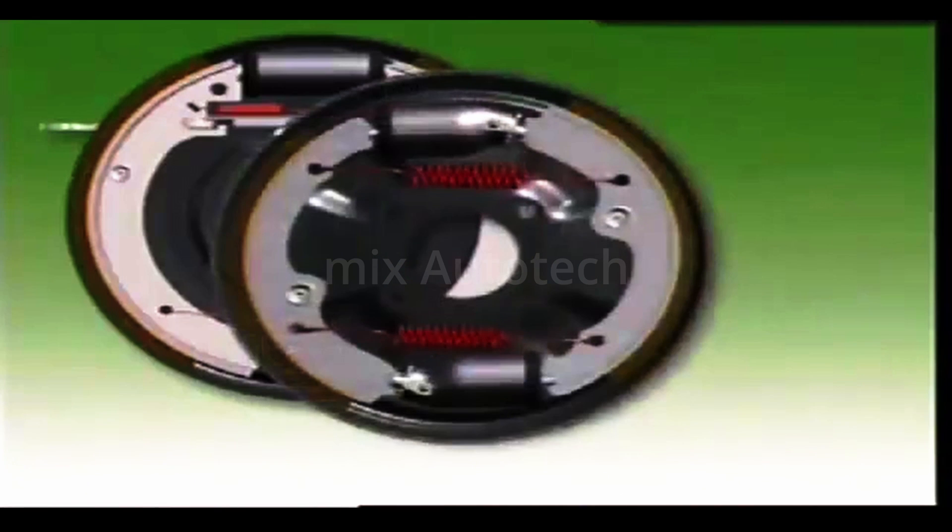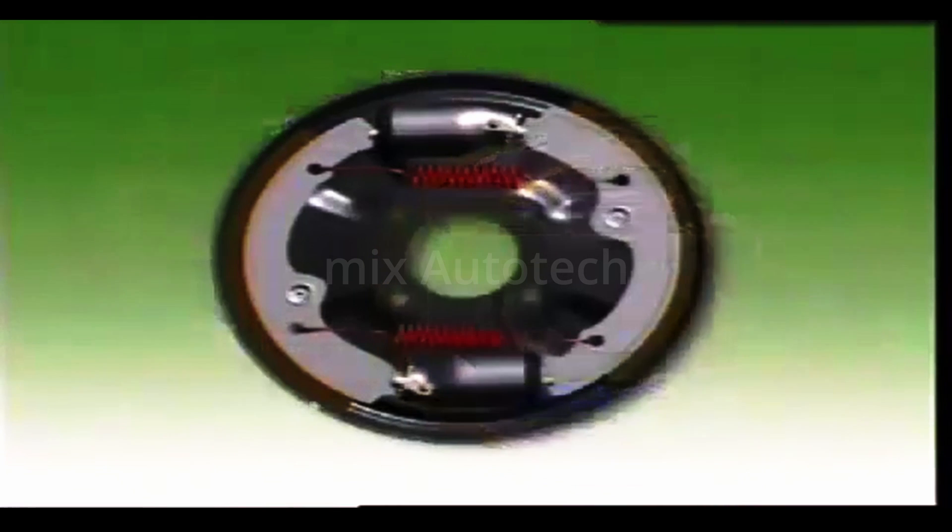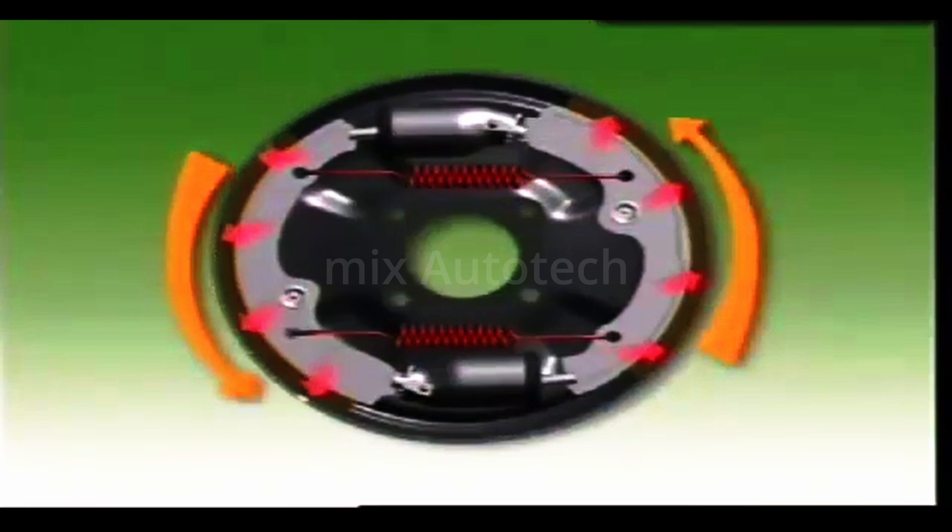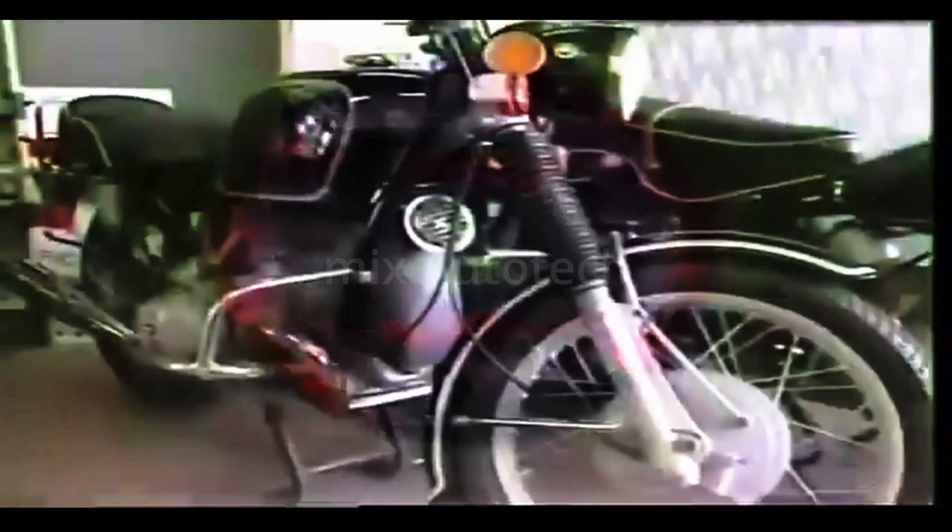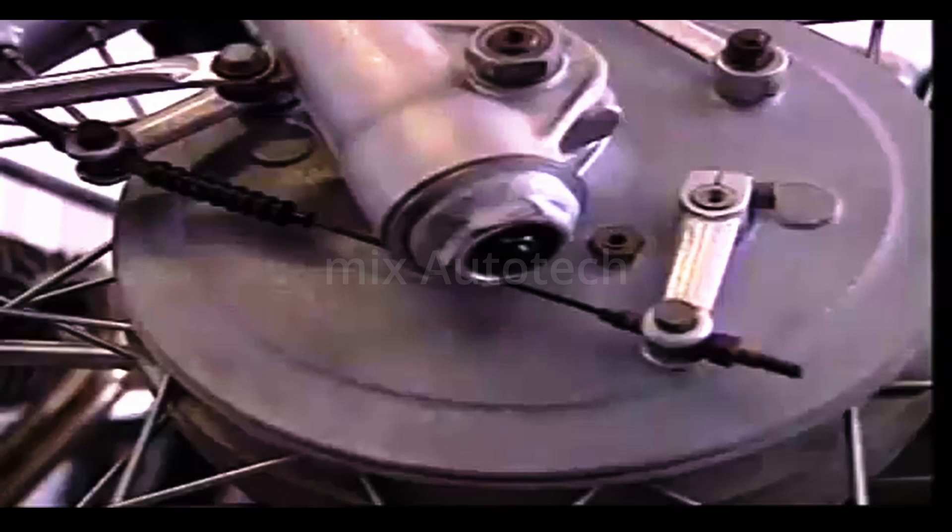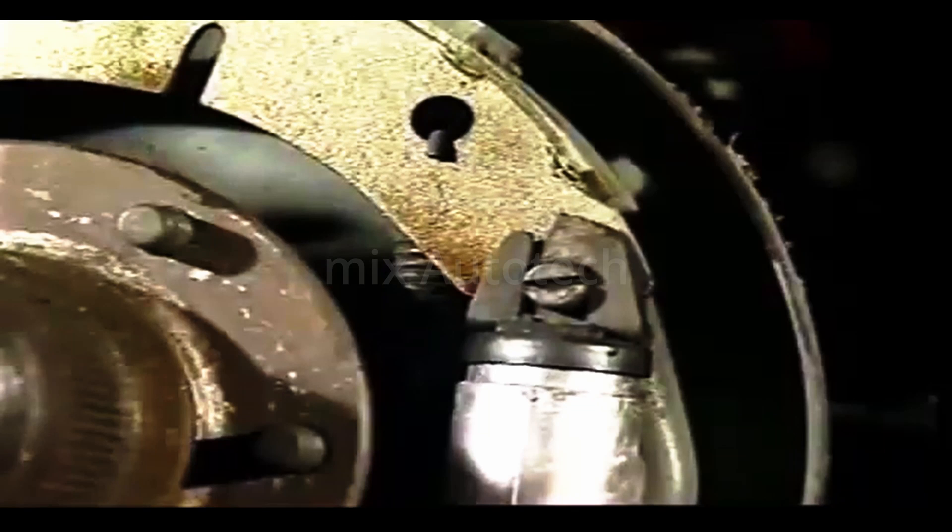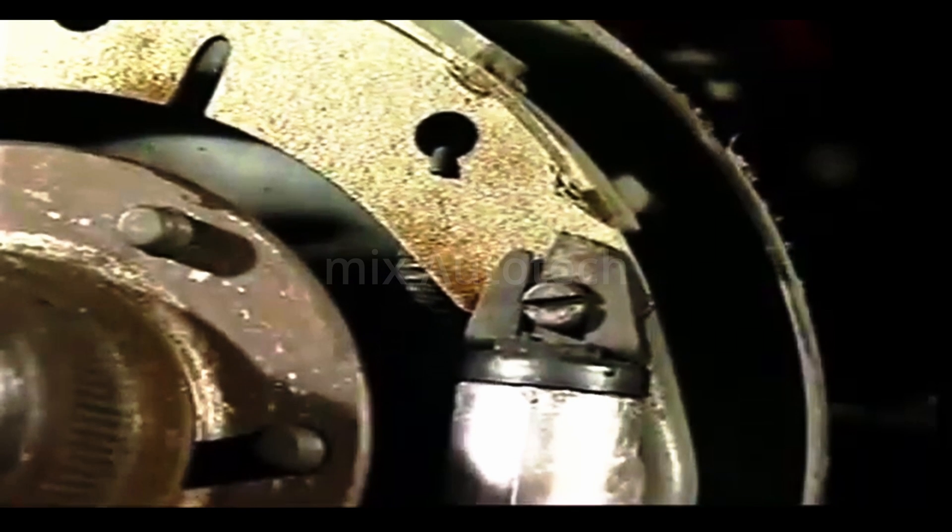Three brake designs are in general use: single leading shoe, twin leading shoe, and duo servo. Each one uses the wedging or self-energizing action of the brake shoe to assist the lining to grip the rotating drum when the brakes are applied. The twin leading shoe has an actuator for each brake shoe. The actuator can be mechanical, however a hydraulic actuator is popular on light vehicles. The hydraulic actuator is called the wheel cylinder.